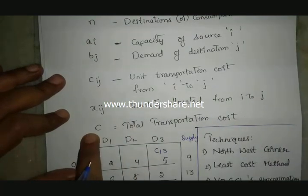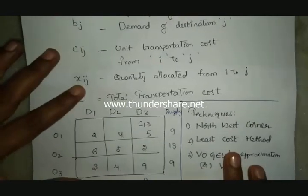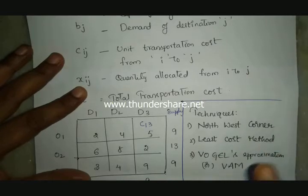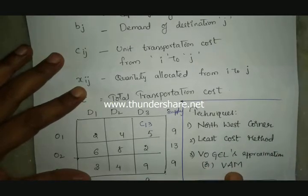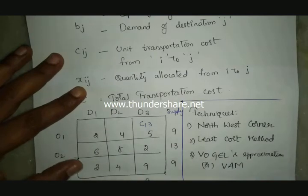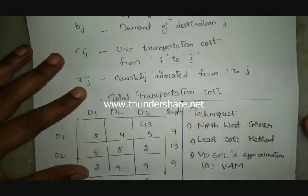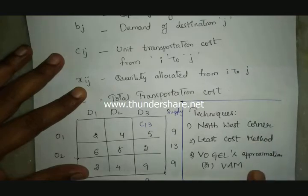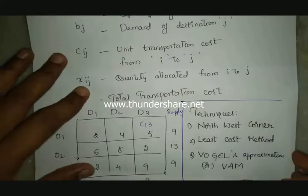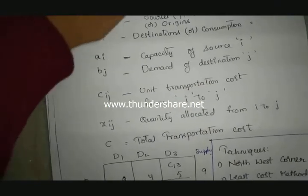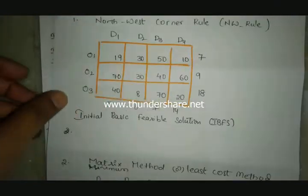M is the number of sources or origins, N is the number of destinations or distribution centers. AI is the capacity at location I, BJ is the demand at destination J, and CIJ is the unit transportation cost from I to J. We will use techniques to find the initial basic feasible solution.